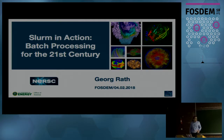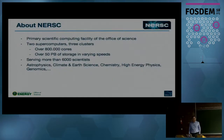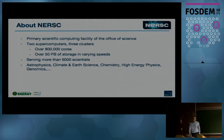I'm George. I'm going to present Slurm in Action: batch processing for the 21st century — we're going to make batch processing cool again. I work for NERSC, which is the primary scientific computing facility of the Office of Science. We have two supercomputers, Cori and Edison, and three smaller clusters. Together that's around 800,000 cores, 50 petabytes of storage, we serve 6,000 scientists from very different fields, and everything we do is open science.